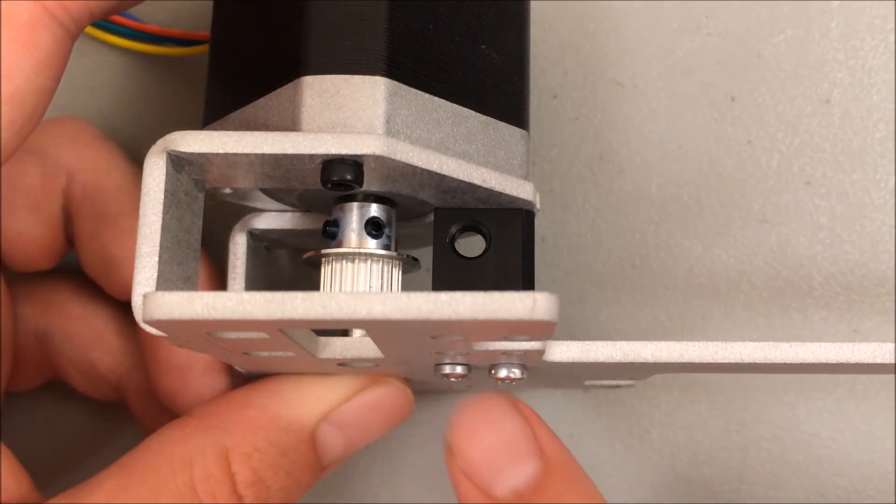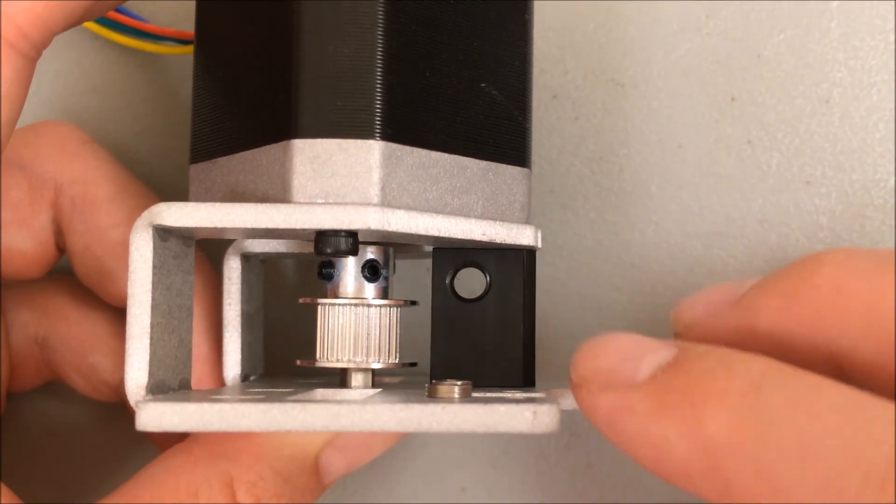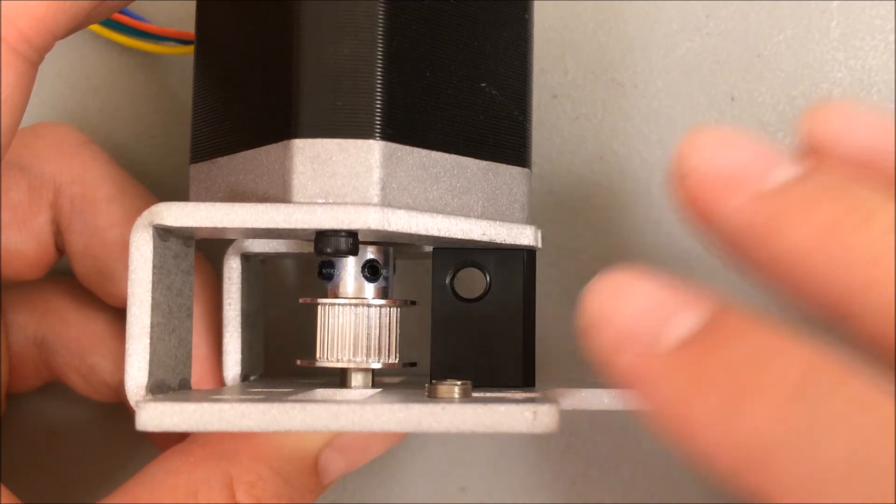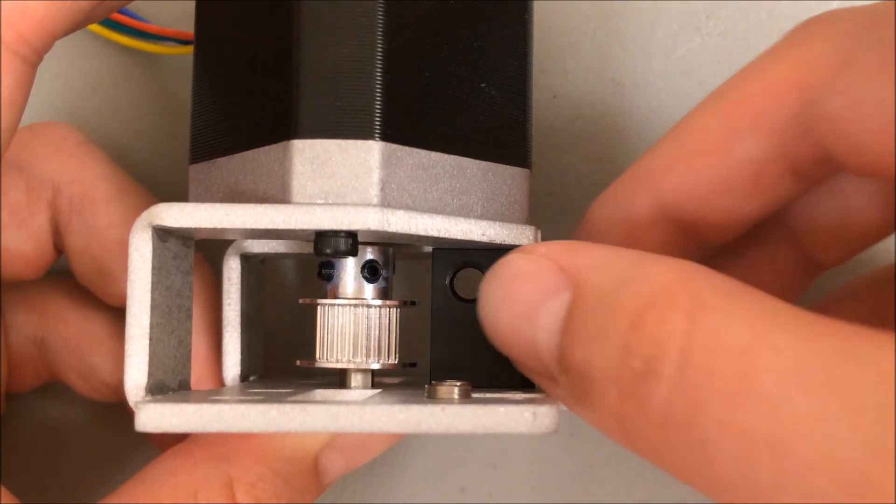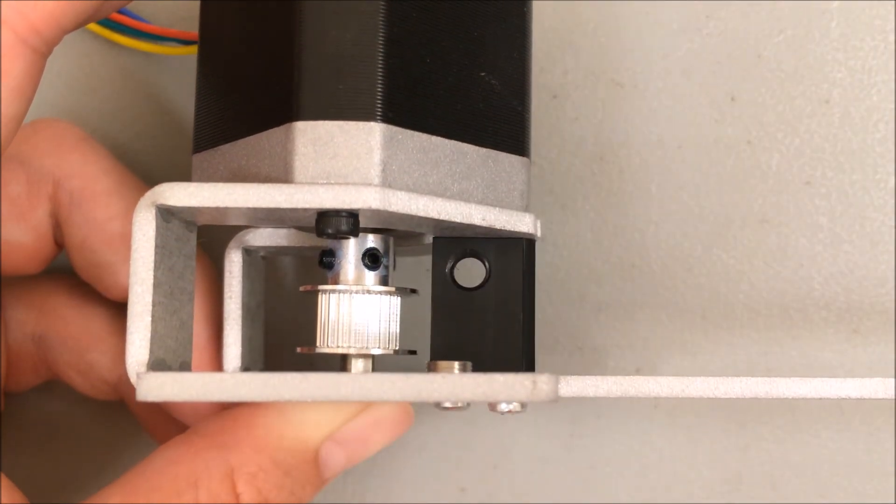Once you finish tightening these two screws, the Delrin block will be in here very secure. You may have seen some air pockets between the Delrin block and the frame when you first started tightening those screws. Those should be completely gone. Again, it's very firm and very strong. If it feels secure, you're ready to move on.